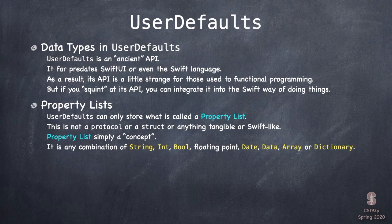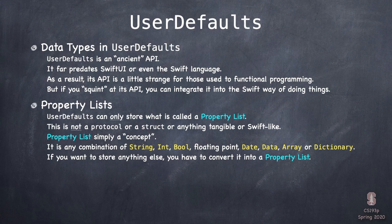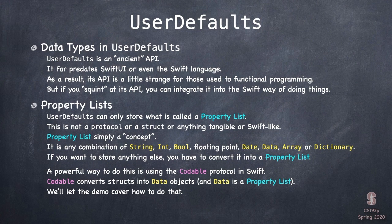For example, an array that has dictionaries with strings as the keys and ints as the values — that would be a PropertyList. A really powerful way in Swift to convert an arbitrary struct into a PropertyList is using the Codable protocol. I'll show you that in the demo. It's a great way to turn a struct into a data, and a data — a bag of bits — is a PropertyList, so we can throw it in UserDefaults.